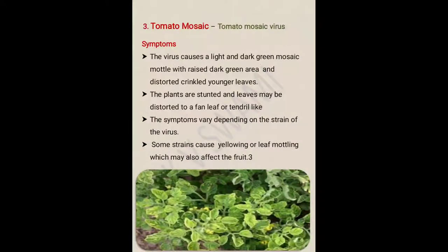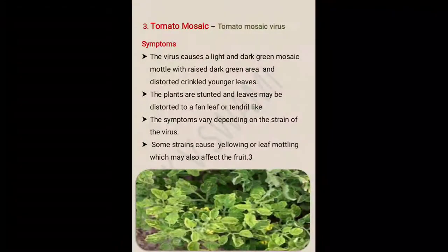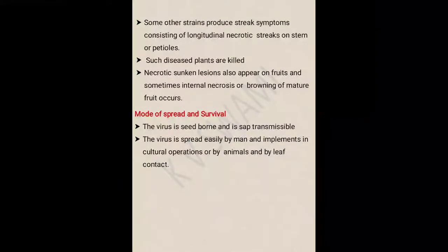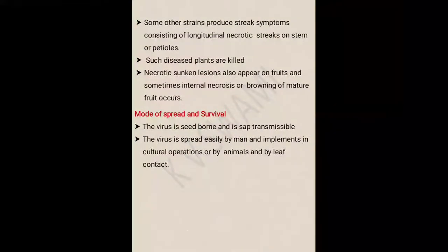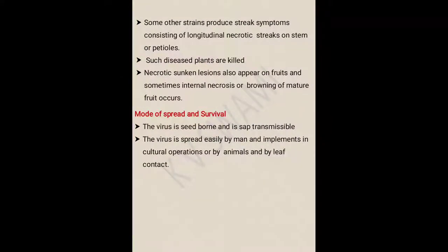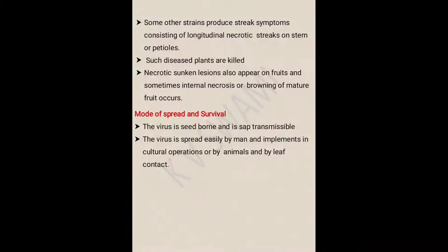Symptoms vary depending on the strain of the virus — if the strain changes, there will be a slight change in symptom expression. Some strains cause yellowing or leaf mottling which may also affect the fruit. Other strains produce streak symptoms consisting of longitudinal necrotic streaks on stems or petioles, and such diseased plants may ultimately be killed. Necrotic sunken lesions also appear on fruits, and sometimes internal necrosis or browning of mature fruit occurs.